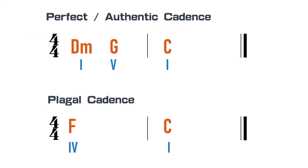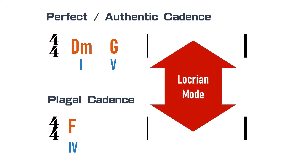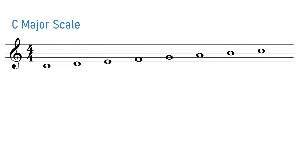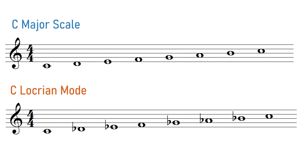Here's how it works. When the music gets to its last chord, instead of going to the final one chord of the home key, we apply modal interchange and shift it to another key. In this example, I'm using the Locrian mode, which is rarely used. Let's take a look at the notes of the C major scale and the C Locrian mode.